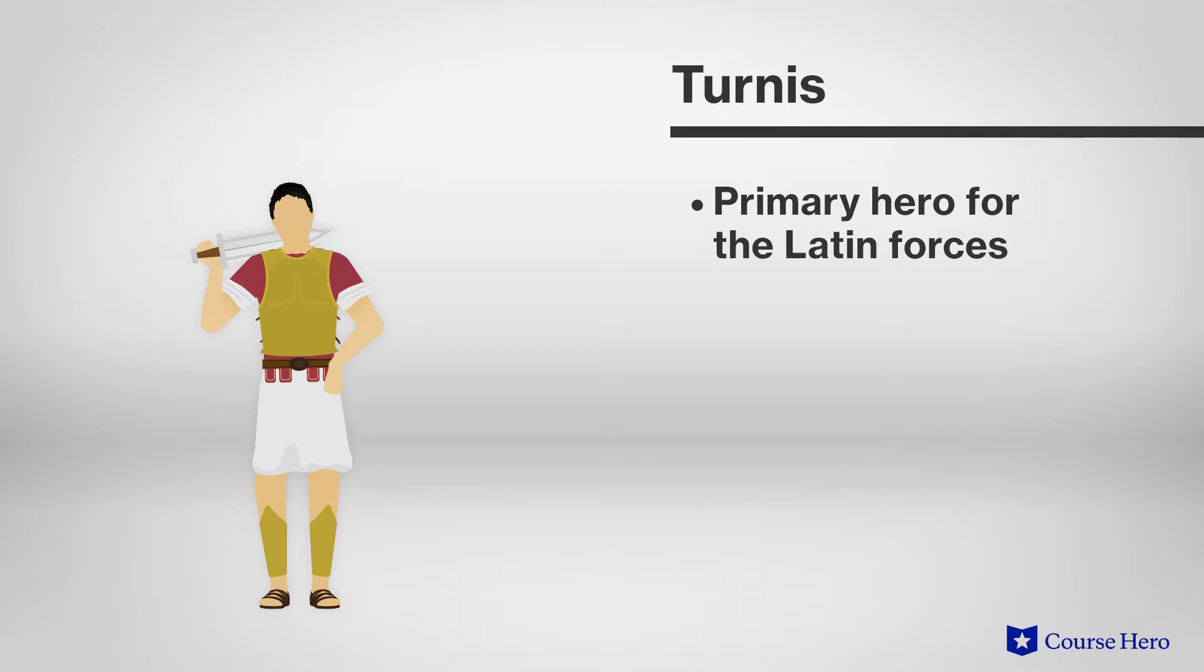Turnus is the primary hero for the Latin forces that fight Aeneas in Italy. Like Aeneas, he's large, attractive, unusually strong, and the son of a goddess, a more minor one. He fights heroically in battle.